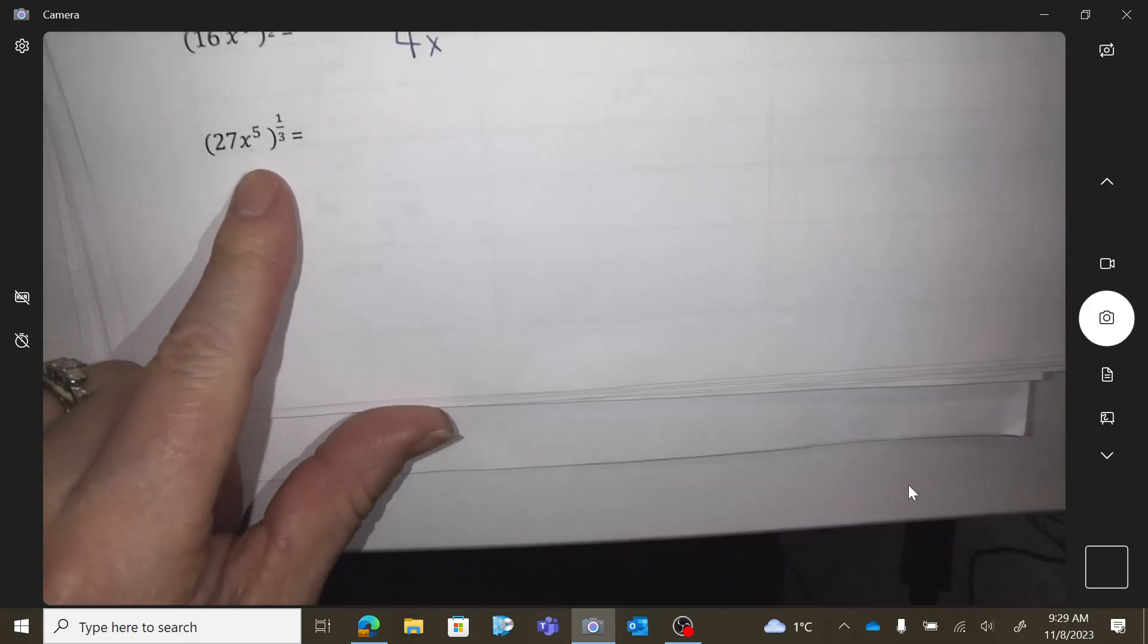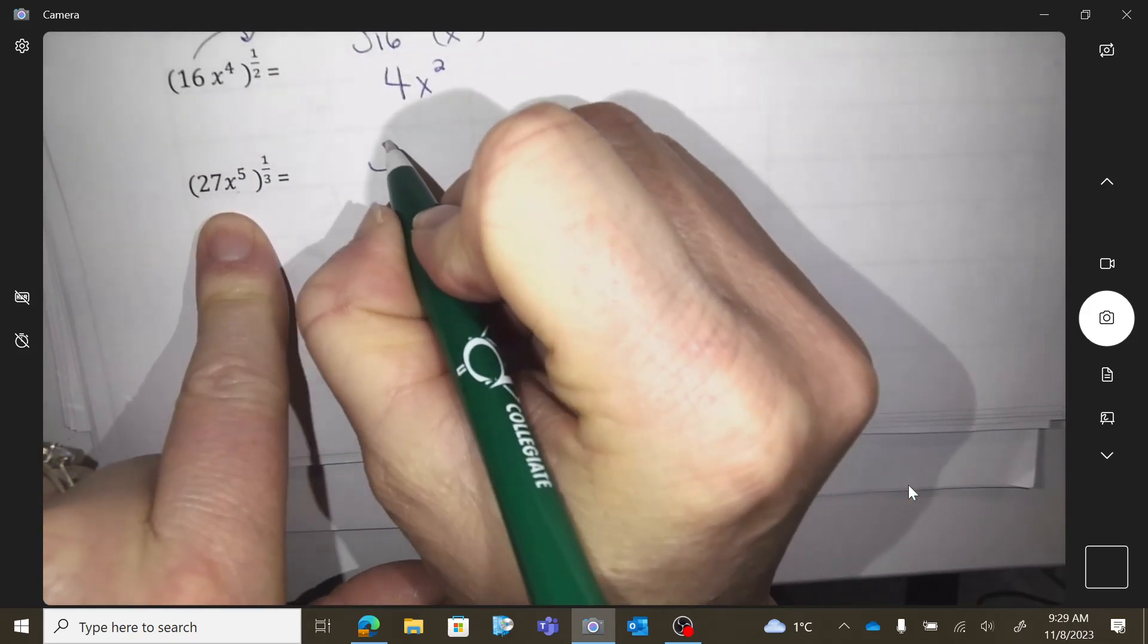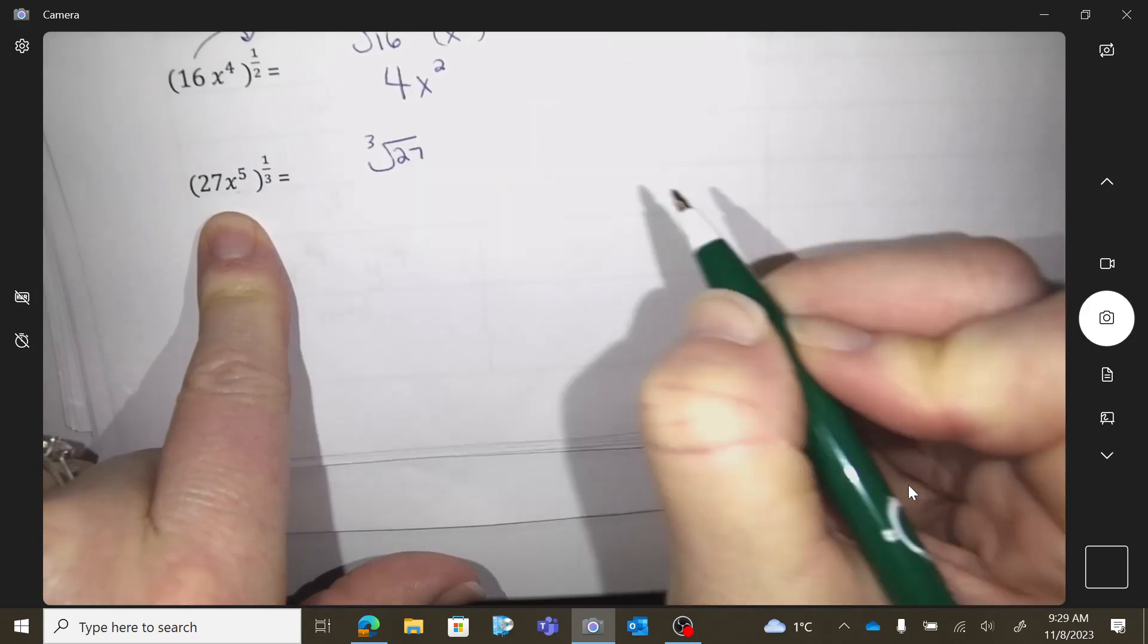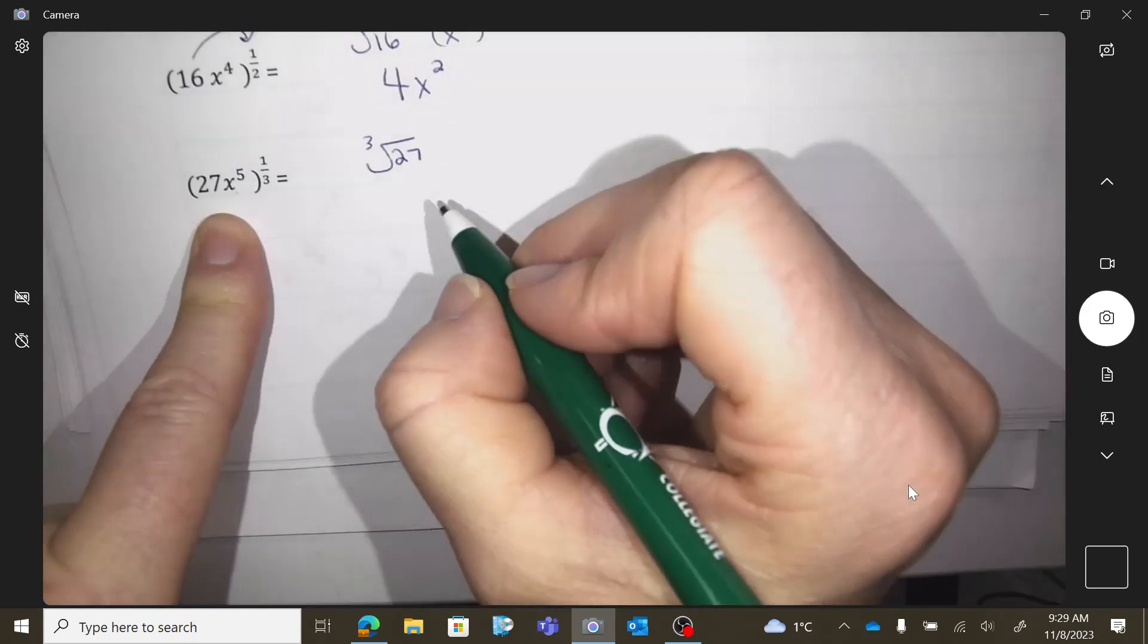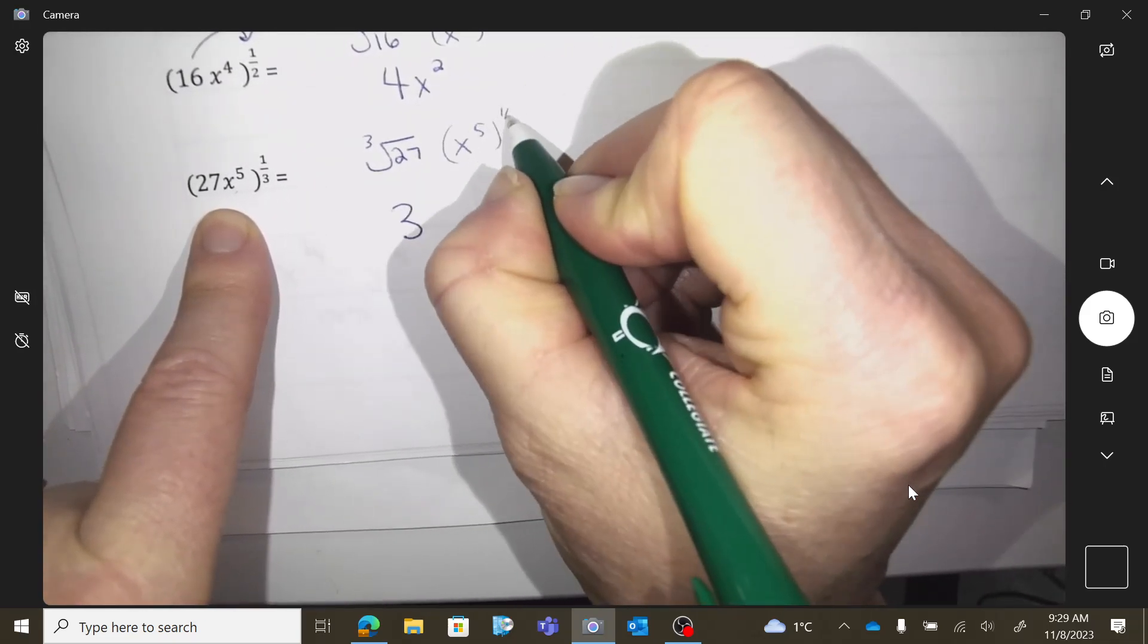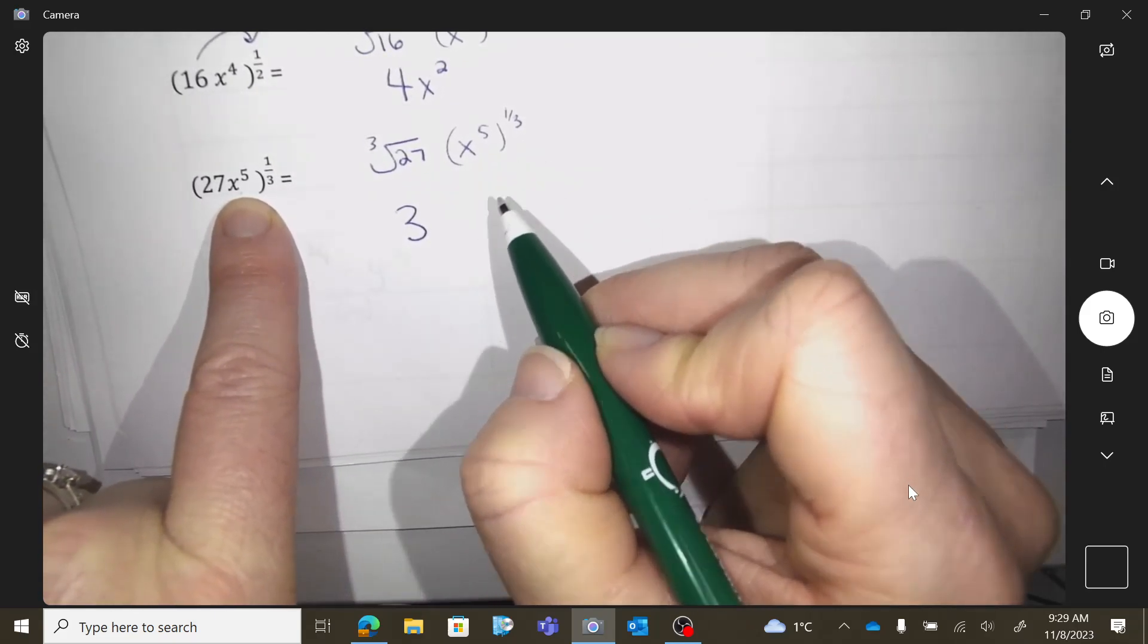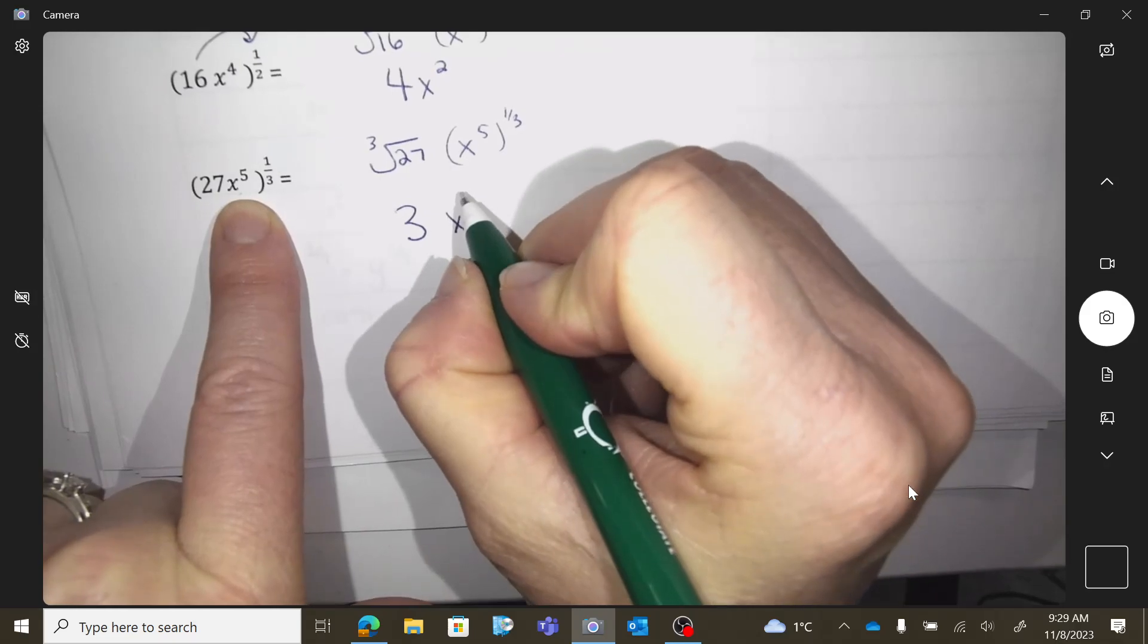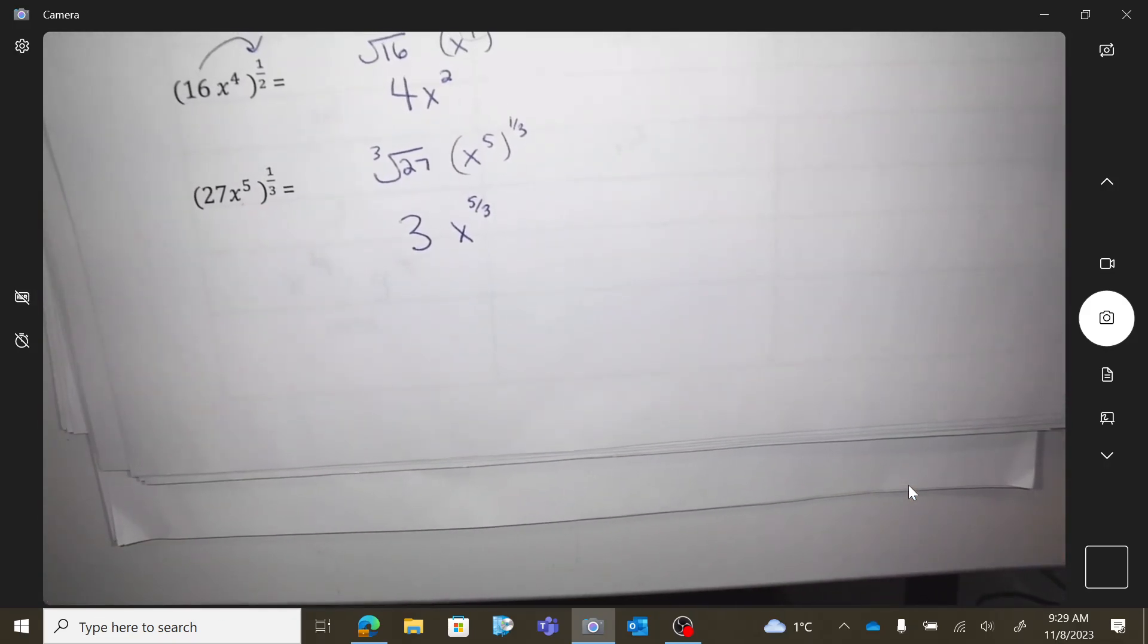Okay, so on this one I do the math of the coefficient. So what's the math of the 27? So 3. And then what's the exponent rule? Multiply. And you get 5 thirds.